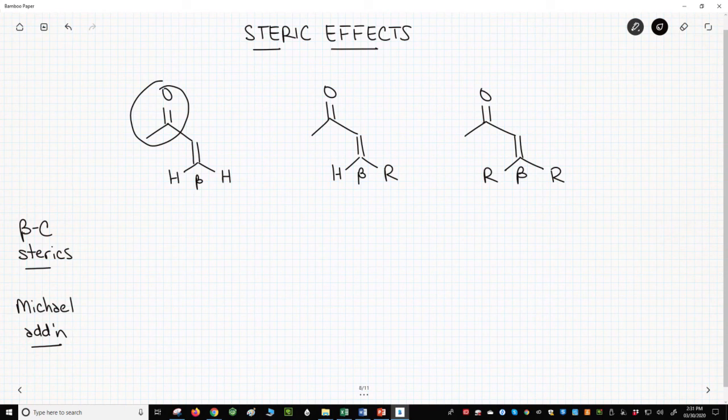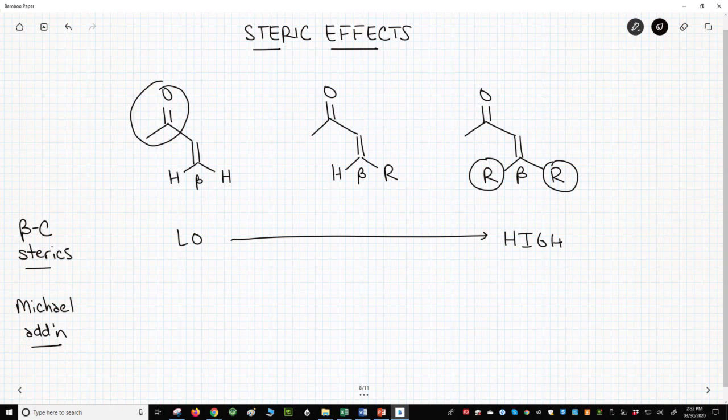On the left, we have no R groups. In the middle, we have one R group. On the right, we have two R groups. As the beta carbon becomes more sterically hindered, going from left to right, the Michael addition will become less likely.